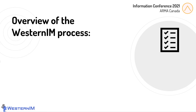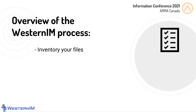Let's take an overview of the Western IM process. Our first step is to take an inventory of the files on the shared drive, determining what it is that you actually have there. Next, we classify the files — we identify what types of information the files represent, and we define the attributes and metadata that are needed for each type. Typically, this is also when we identify security and retention requirements.